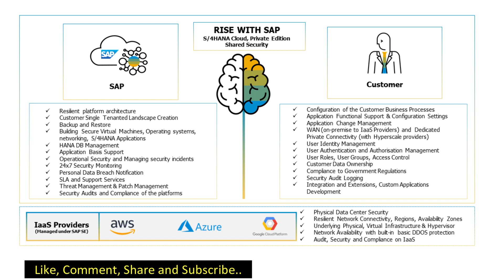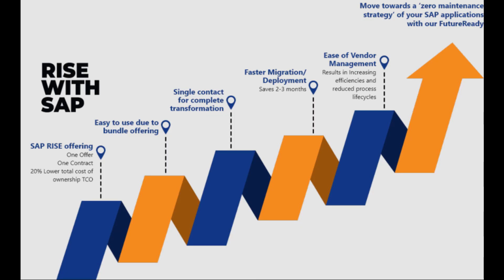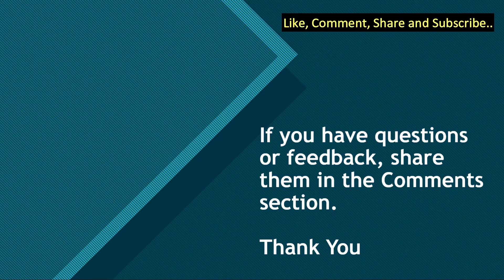Businesses can also use RISE with SAP for automation, as it includes SAP Intelligent Robotic Process Automation, which helps businesses automate repetitive tasks and free up their employees to focus on more strategic activities. Overall, RISE with SAP can transform operations, reduce costs, and increase agility, providing businesses with the tools and services to move toward the cloud and modernize their operations. If you got value from this video, do like, comment, and share. Don't forget to subscribe, and share any questions in the comments below.